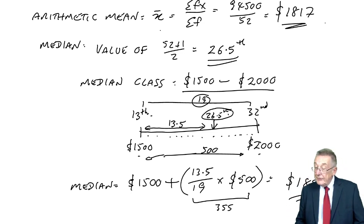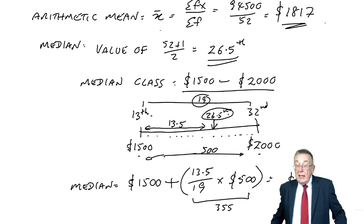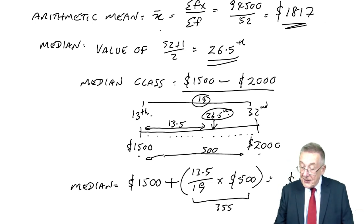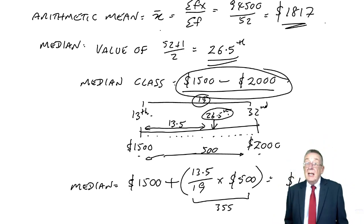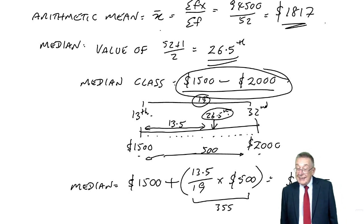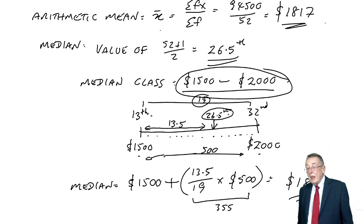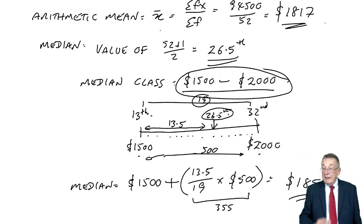So there we are. It is a bit messier. Do check what's required. If you just want the median class, then there's your answer - it's somewhere between 1500 and 2000. If you are required to put a value on it, wind back and listen to that again slowly. But we do apportion the way along as though they are all spread evenly.